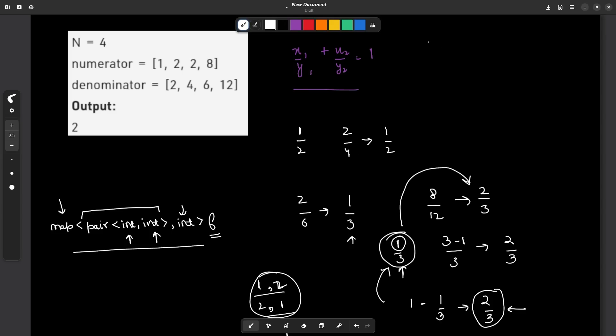For example let us say the reduced fractions are like these. The first is 1 by 2, then we again have 1 by 2, then we have 1 by 3, and then we have 2 by 3. When I reach this particular position I say that I have 1 by 2, I need 1 by 2 more but I do not have any 1 by 2 with me. So this will contribute 0 to my answer. But now before moving to this particular index I will increment its frequency.